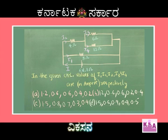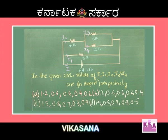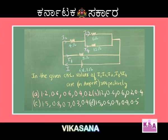In the given circuit, the values of I, I1, I2, I3, I4 in amperes are respectively: option A: 1.2, 0.6, 0.6, 0.4, 0.2; option B: 1.2, 0.6, 0.6, 0.2, 0.4; option C: 1.5, 0.8, 0.7, 0.3, 0.4; option D: 1.5, 0.6, 0.9, 0.4, 0.5.